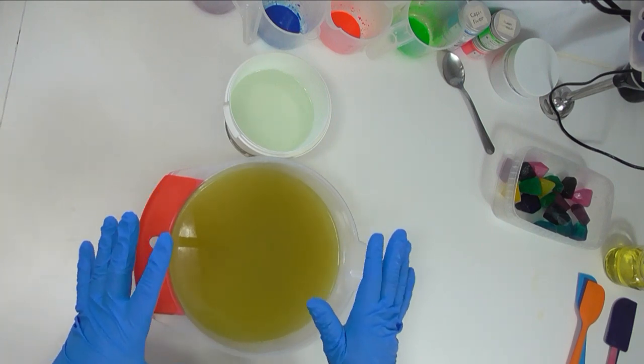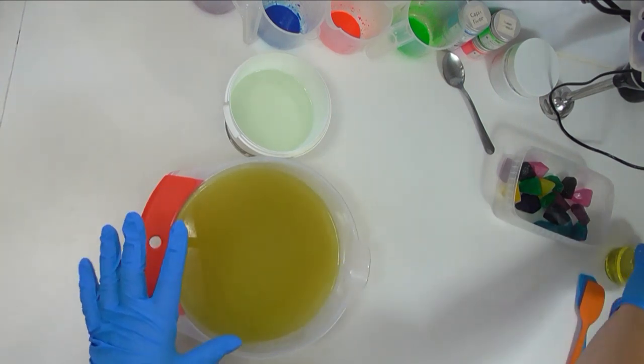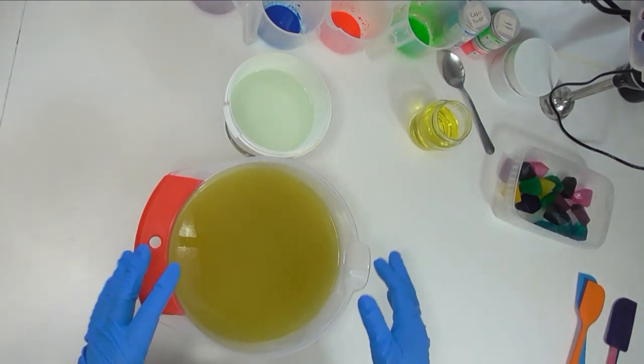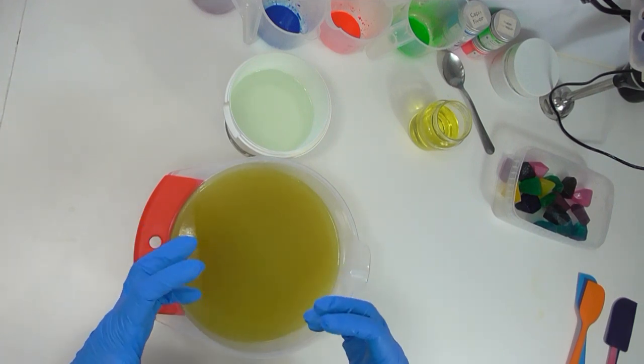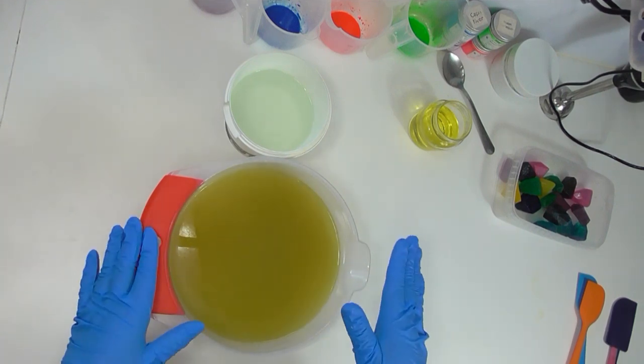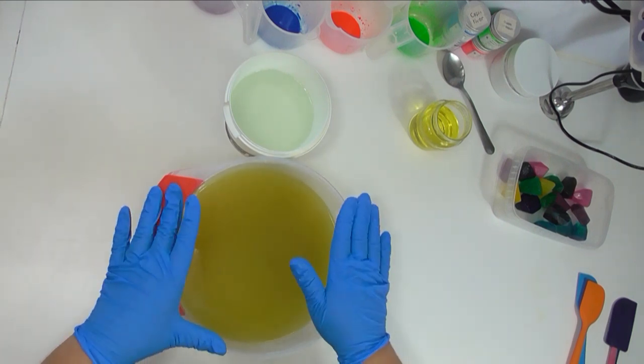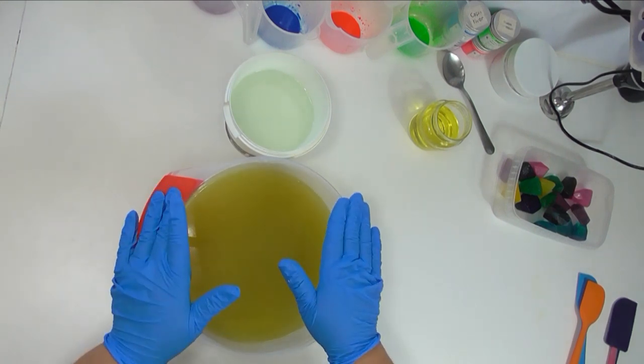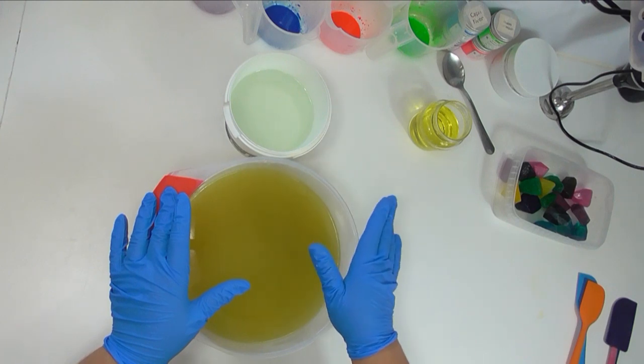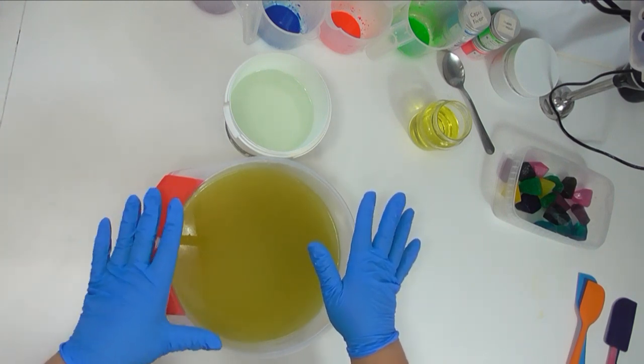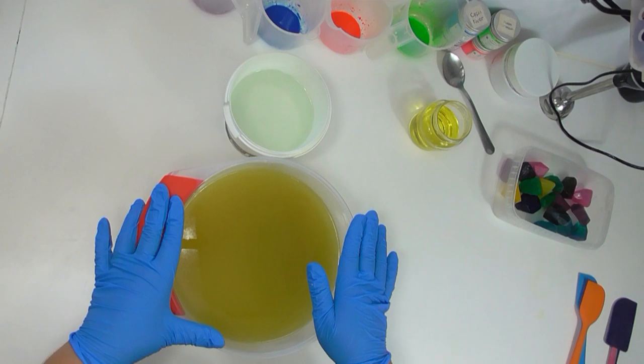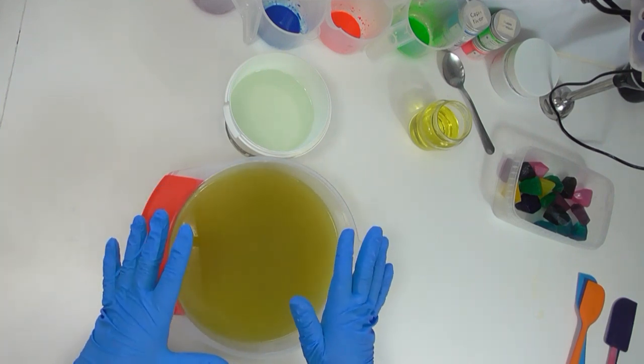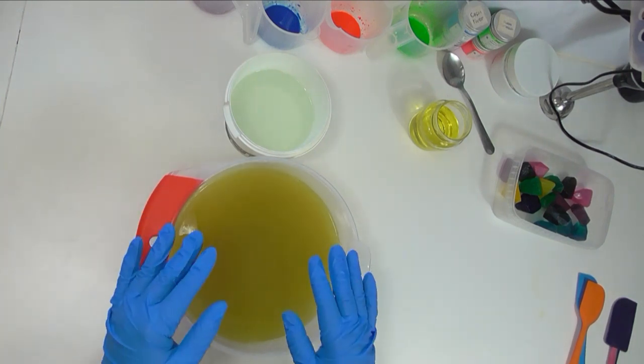Now the reason I decided to mix these two is because I love the smell of the Energy fragrance oil, but I wanted it to have that little bit more pizzazz about it. The Sparkling Watermelon has this really bubbly sort of smell to it. I also chose to mix them because when I first used the Energy fragrance oil it did move trace a little bit faster than what I wanted, whereas the Sparkling Watermelon really slows trace down. I'm hoping that by combining the two I'll get a soap batter which traces just perfectly.